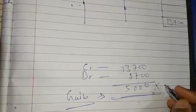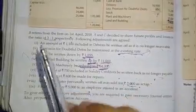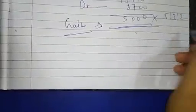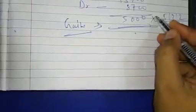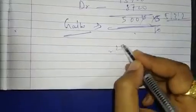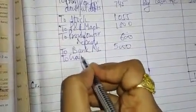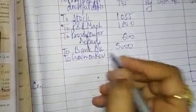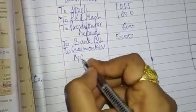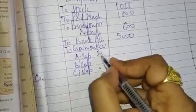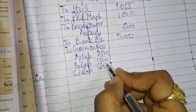Gain को सभी partners में old ratio में divide करना है। Old ratio था 5:3:2। तो: A का share = ₹5,000 × 5/10 = ₹2,500। B का share = ₹5,000 × 3/10 = ₹1,500। C का share = ₹5,000 × 2/10 = ₹1,000। Total = ₹5,000।